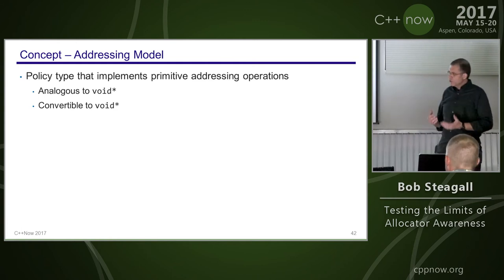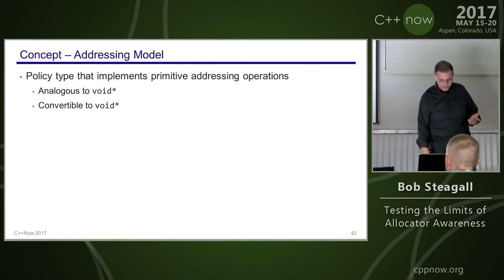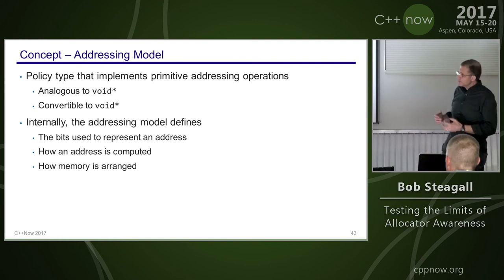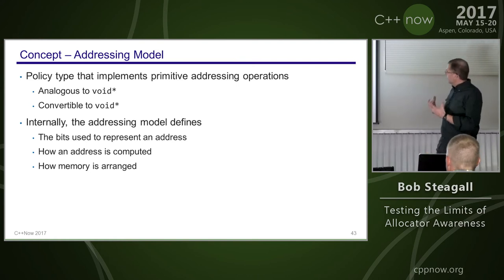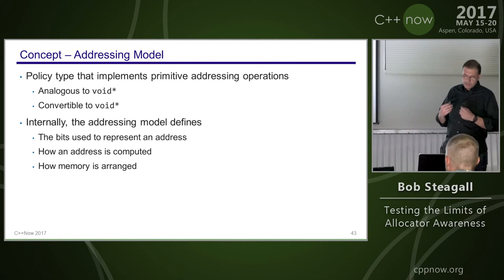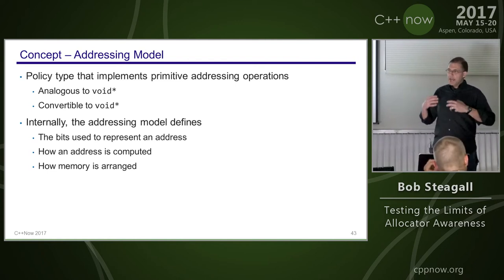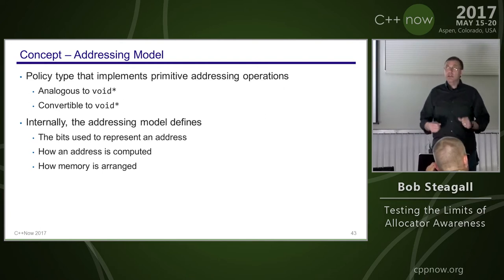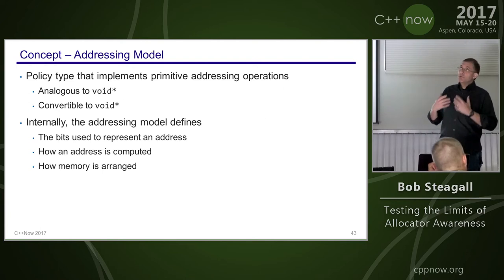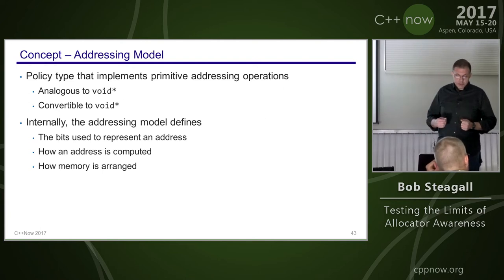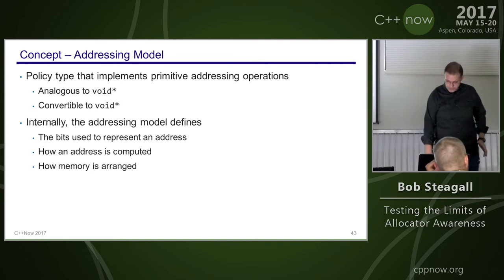How to build the tests: certain aspects of allocator design can be viewed as policy types. When I think about memory allocation I see six concepts in two broad categories. Structural management is composed of: the addressing model, the storage model, the pointer interface, and the allocation strategy. Concurrency management consists of thread safety and transaction safety. The addressing model is a policy type that implements primitive addressing operations — analogous to void*, convertible to void*. Internally it defines the bit pattern representing an address, how an address is computed from those bits, and by its address computations implies how it expects memory to be arranged.